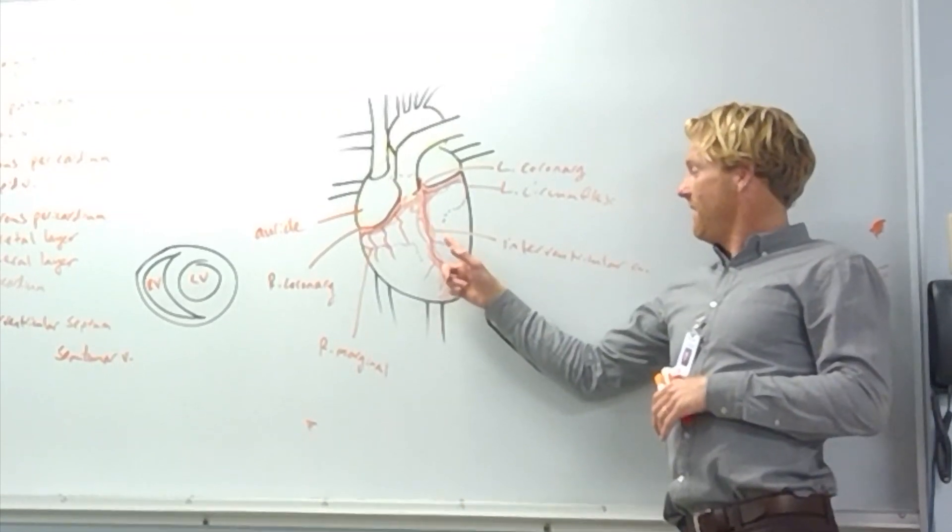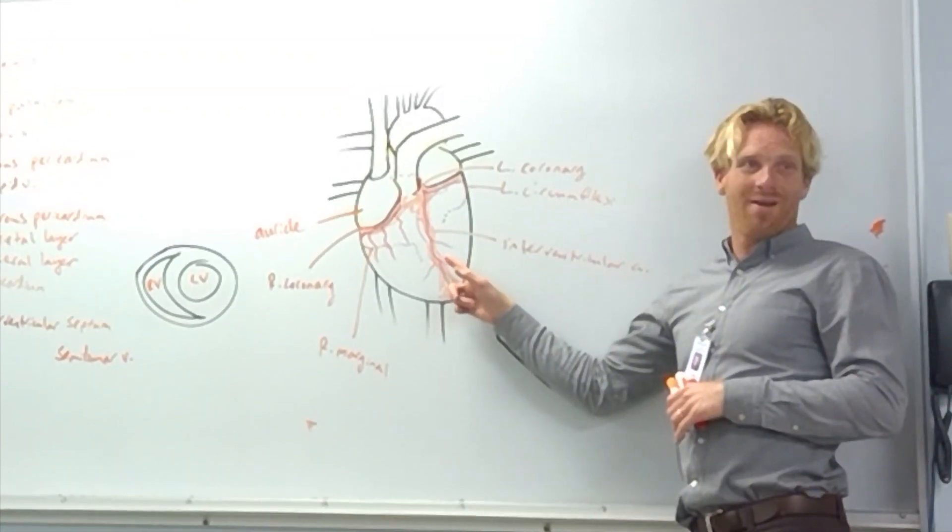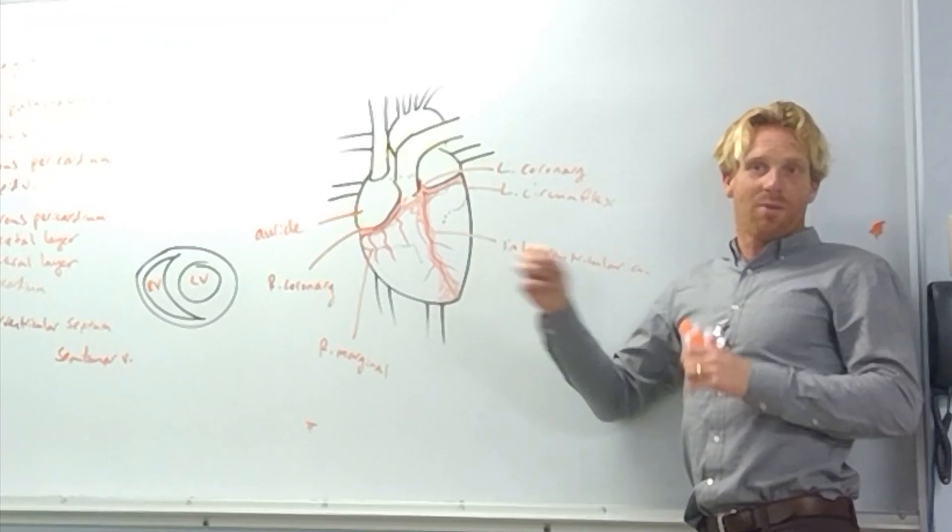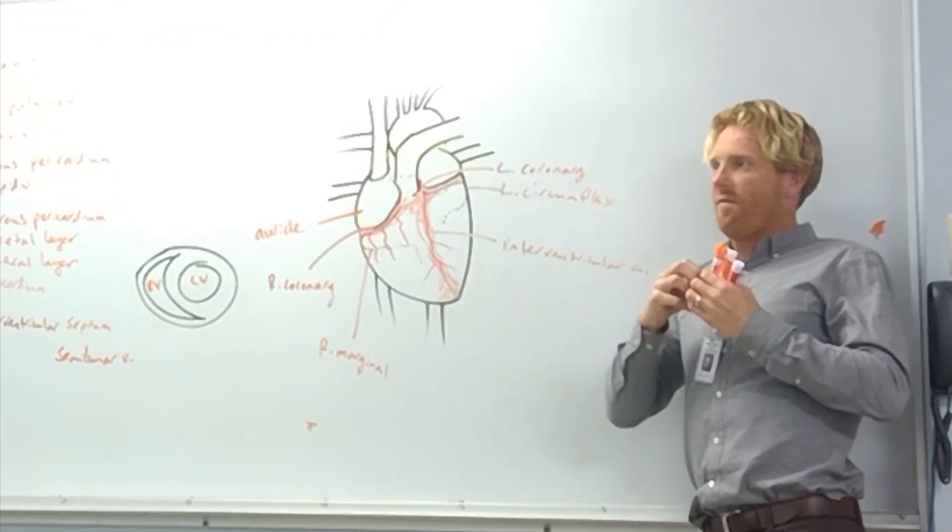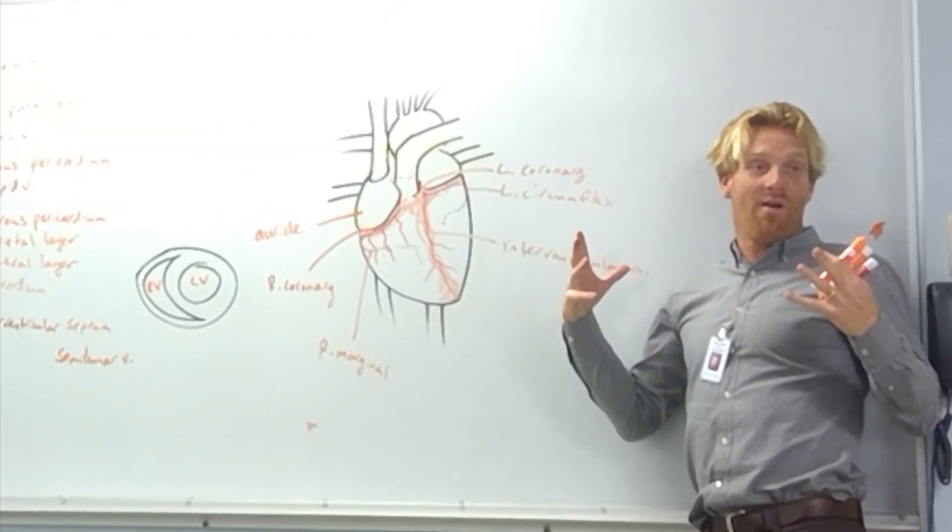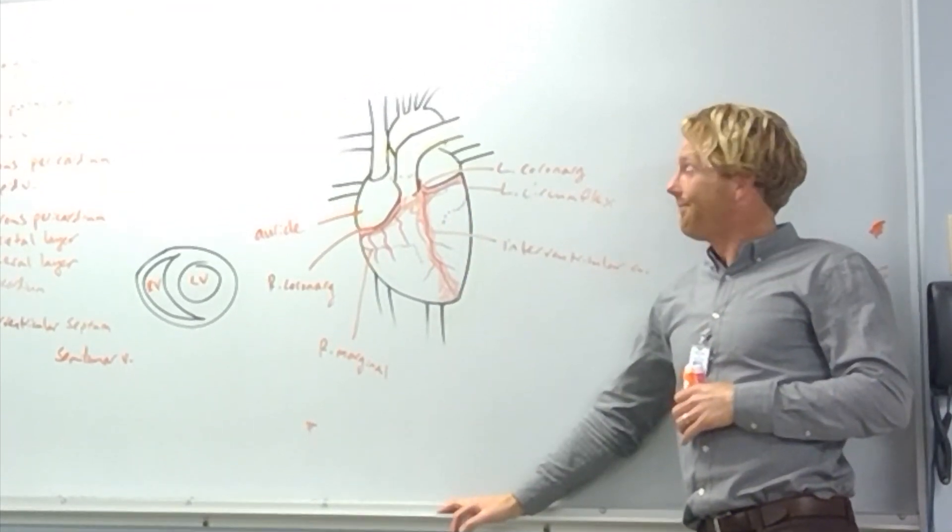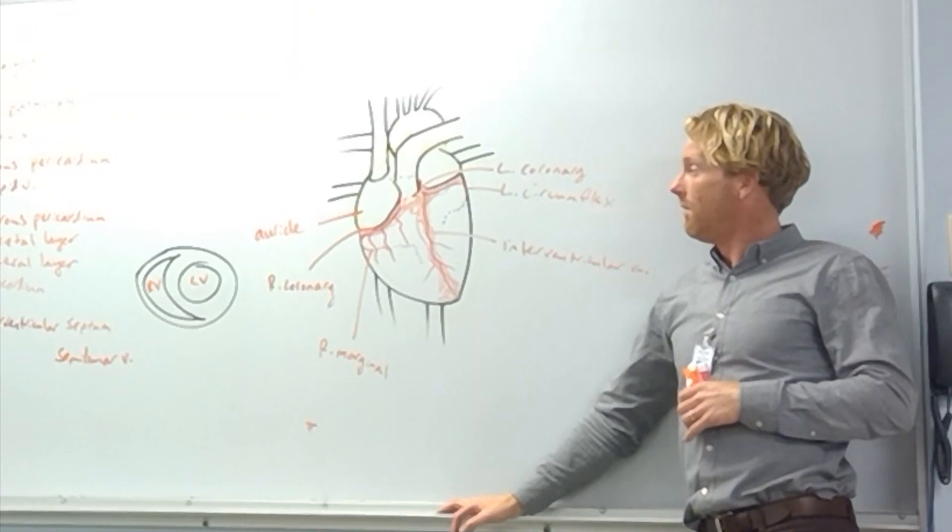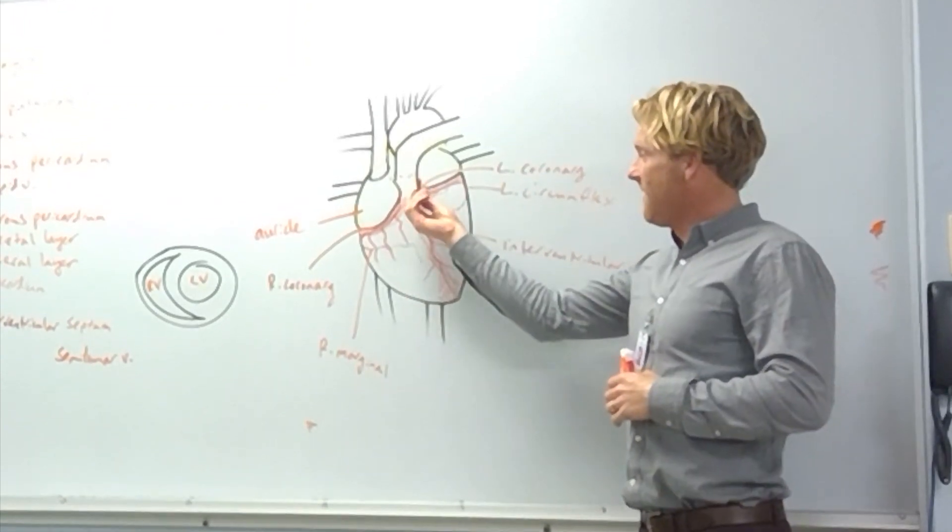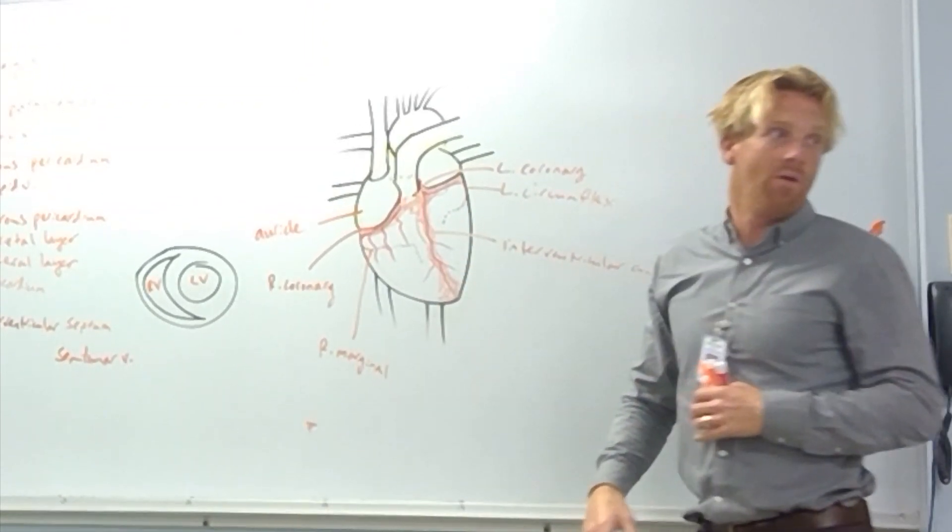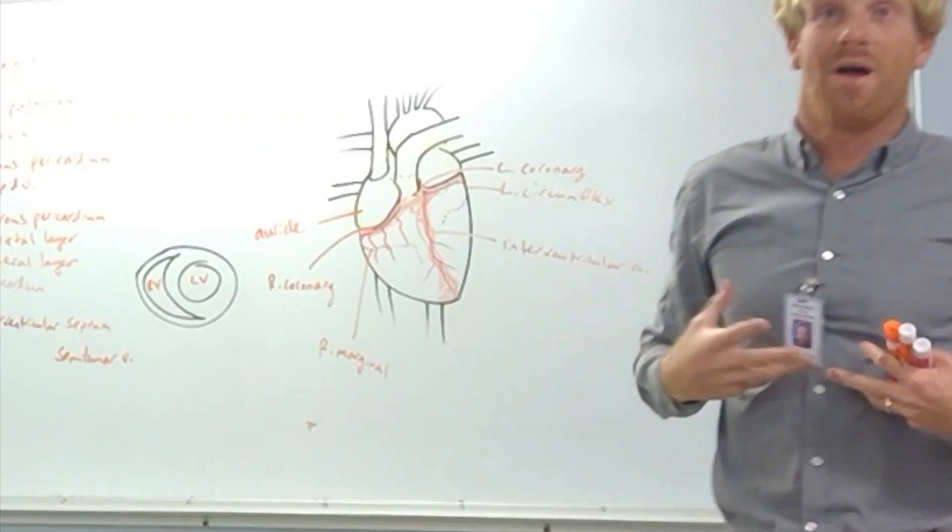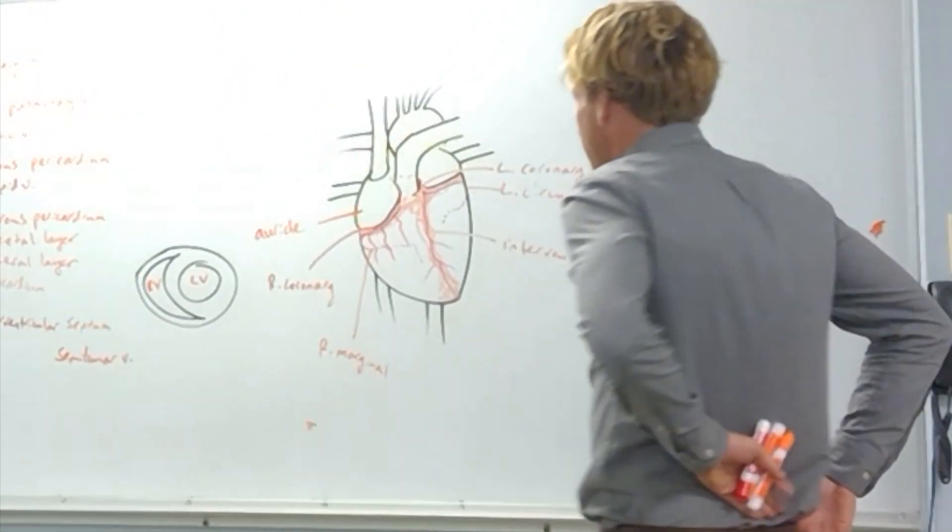This guy right here, the interventricular artery, he's called the widow maker because he supplies such a large part of the ventricle. Blood is such a large part of the heart that if he gets blocked, it's a huge problem. And then you can kind of see that he's going to feed blood to both ventricles. So a heart attack there is going to compromise the function of both ventricles.